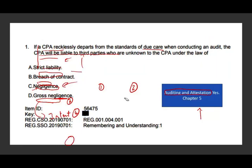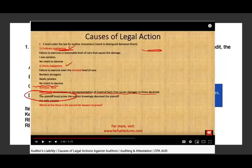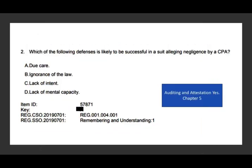Now we can go back and answer the question. If you see the word reckless — recklessly depart from due care — remember that reckless means gross negligence. It cannot be ordinary negligence, because negligence is a minor infraction. When it comes to reckless, the word that goes with it is gross negligence. So reckless and gross negligence go together. You have to memorize those rules because you can answer a lot of easy questions and get easy points by remembering them.